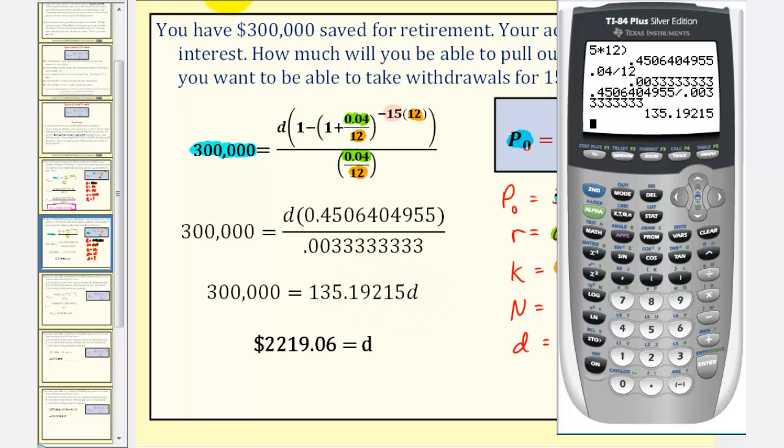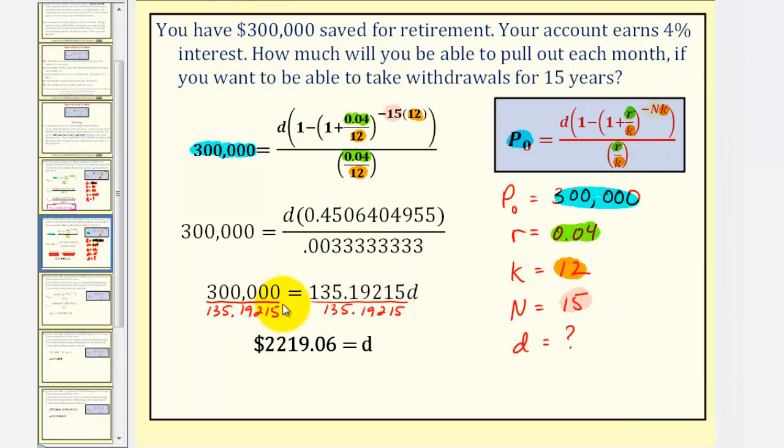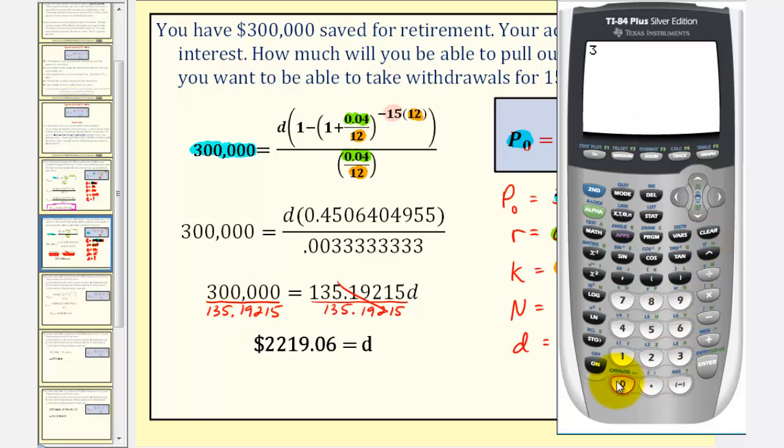To solve for D, we'll divide both sides by the coefficient of D. This simplifies to 1, so we have D on the right side. We have 300,000 divided by 135.19215.